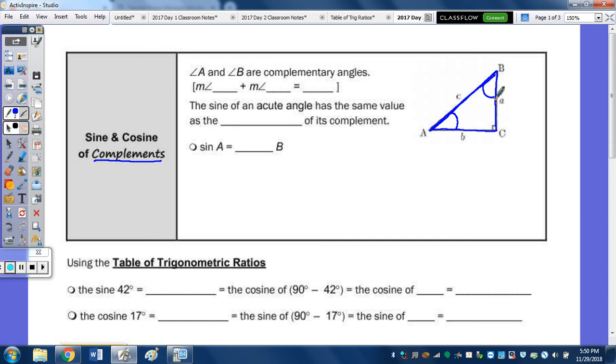So remember, the measures of complementary angles - the measure of angle A plus the measure of angle B is 90 degrees. The next blank is from a previous note page as well. We made note that the sine of an acute angle has the same value as the cosine of its complement, or the other acute angle in the right triangle.